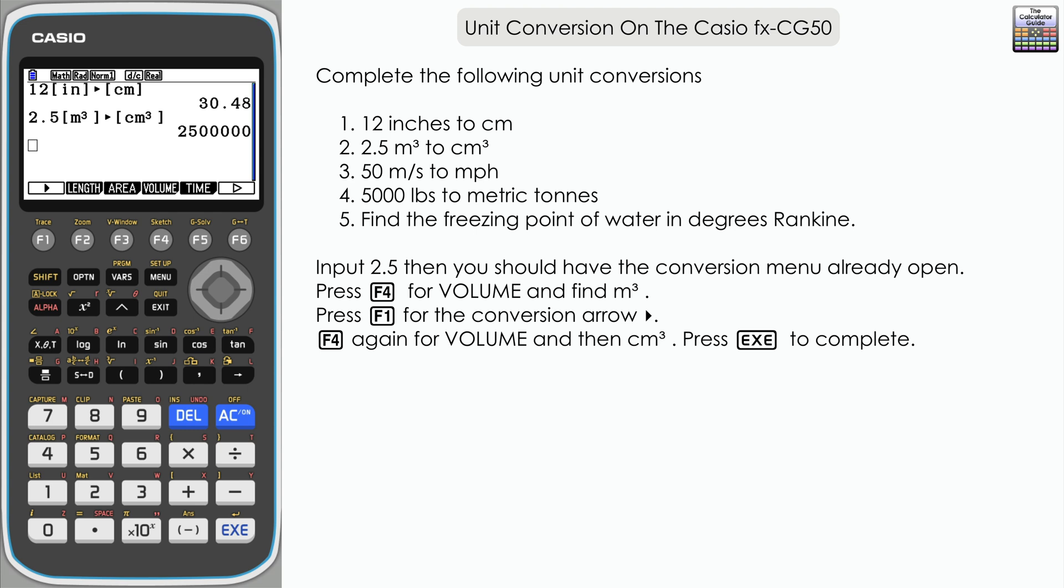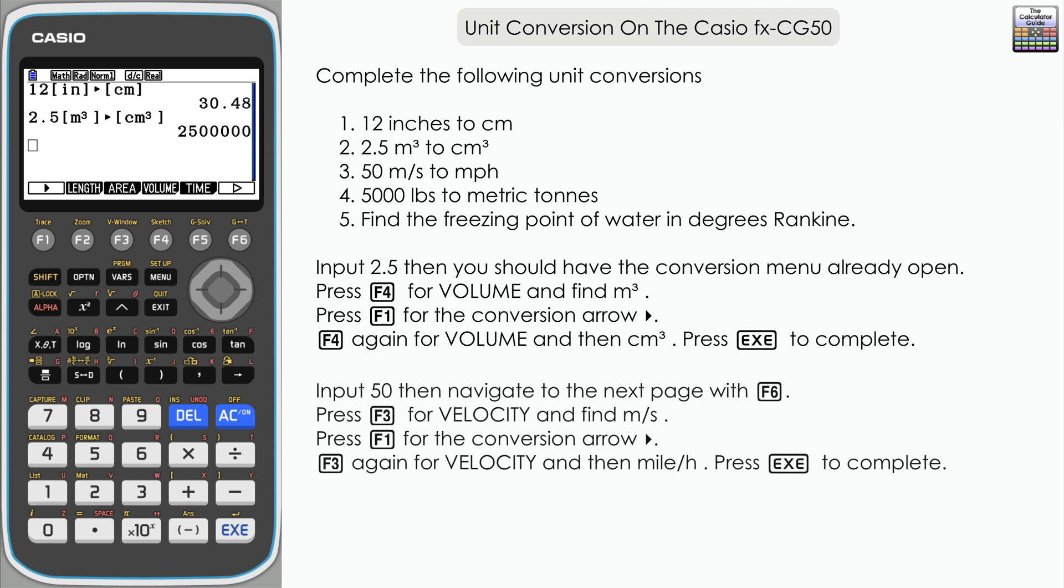50 meters per second to miles per hour. Input 50 and this is a measurement of velocity so we're going to navigate to velocity, F3 from here, and then it's option one here: meters per second.